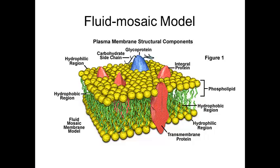The model we have for the plasma membrane is sometimes called the fluid mosaic model. The fluid part comes from the phospholipids themselves, which are quite fluid and have the consistency of oil. The mosaic part comes from all the proteins that are embedded in it, making a pattern like a mosaic.